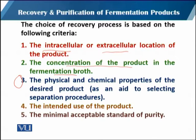The fourth criterion is the intended use of the product — whether it is used in food products, human use, or pharmaceutical products — depending upon where that product has to be used. The fifth criterion is the minimal acceptable standard of purity; we should know what the acceptable purity standard is in the market.